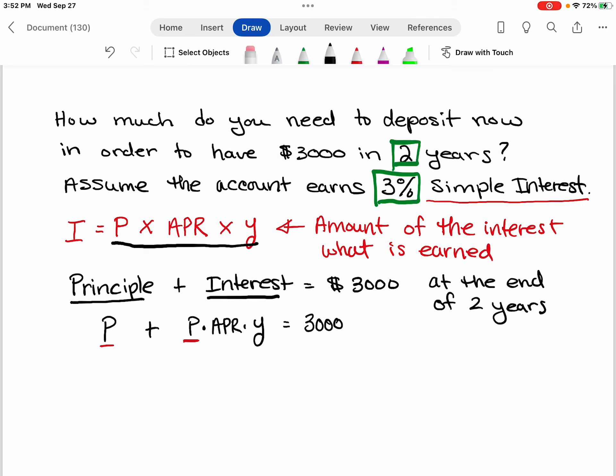So I have the principal plus the principal times the APR, which is 3%, but as a decimal would be 0.03 times the number of years, which is 2.